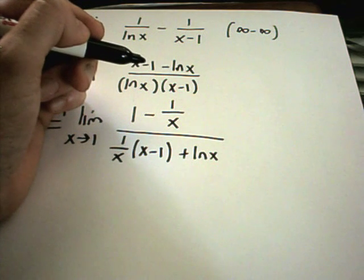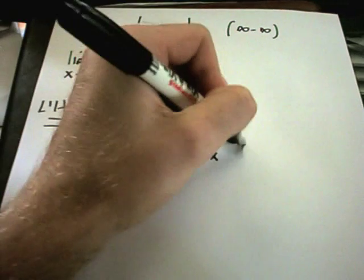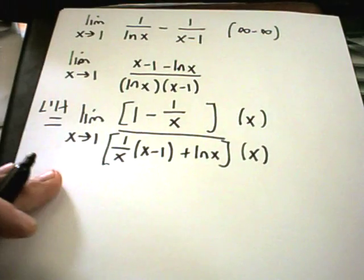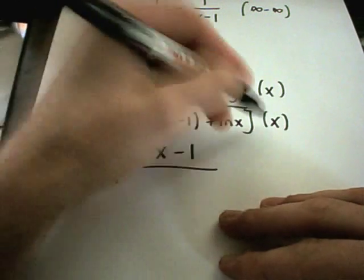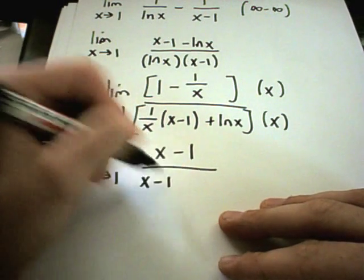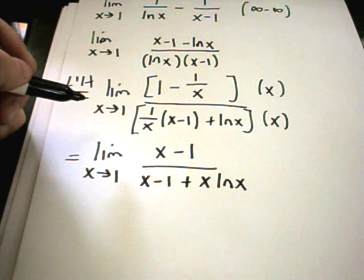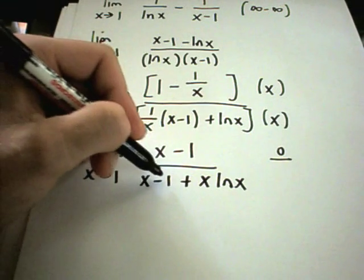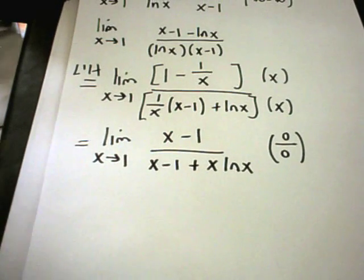The easiest approach is to multiply the top and bottom all by x to get rid of the 1 over x. Multiplying the numerator by x gives x minus 1 in the first term — the 1 over x cancels — leaving x minus 1 plus x times ln(x) on the bottom. If we plug in 1 at this point, we get 0 on top and 0 on the bottom, which means we can use L'Hôpital's rule yet again.